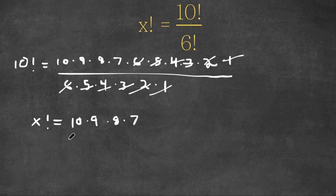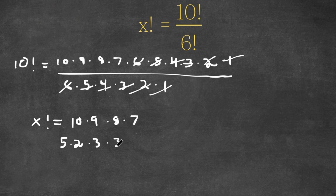Now, 10 is equal to 5 times 2, 9 is equal to 3 times 3, 8 is equal to 4 times 2, and 7 is just 7 — we can't simplify that anymore.